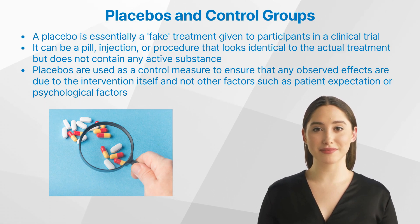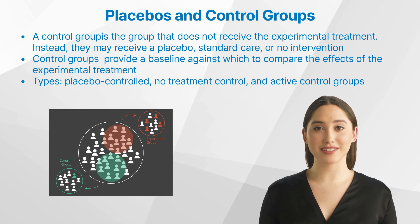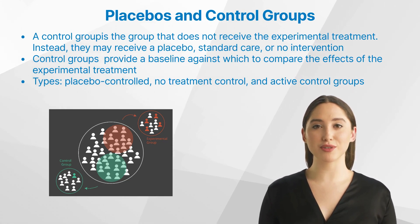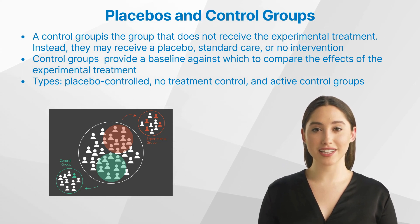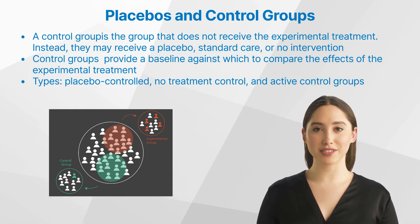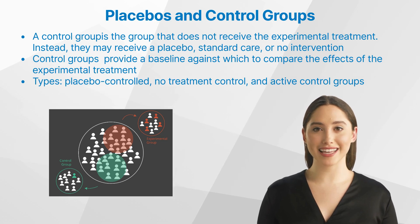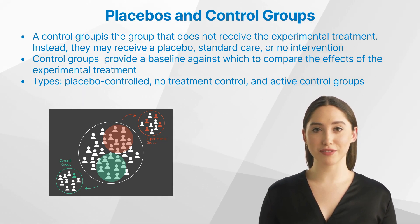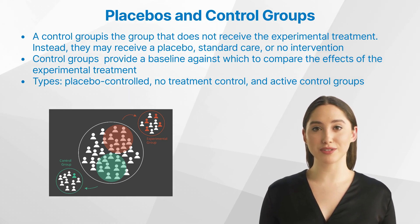Let us go on by understanding control groups. A control group in a clinical trial is the group that does not receive the experimental treatment. Instead, they may receive a placebo, standard care, or no intervention at all. Control groups are crucial in clinical trials as they provide a baseline against which to compare the effects of the experimental treatment. There are various types of control groups, including placebo-controlled, no-treatment control, and active control groups.